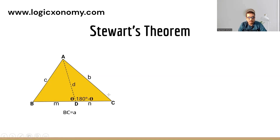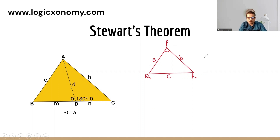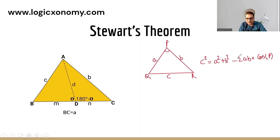Before starting this proof, we have to discuss a very important formula of triangle that is known as the cosine formula. Let a triangle PQR in which PQ is equal to a, PR is equal to b, and QR is equal to c. Then according to the cosine formula, c² = a² + b² − 2ab·cos P. Here, angle P and sides a and b are the adjacent sides of this angle.